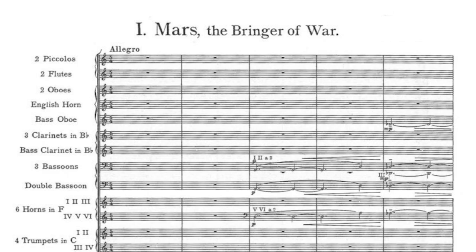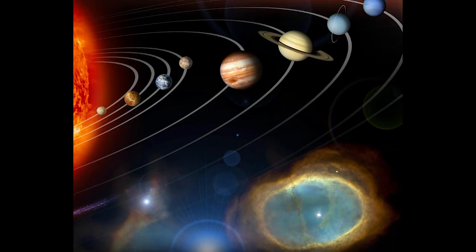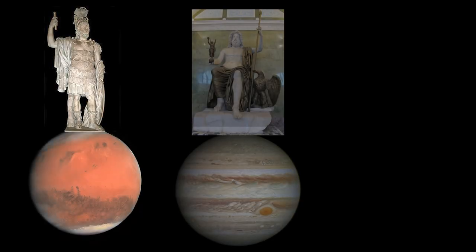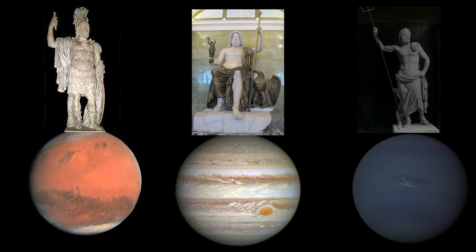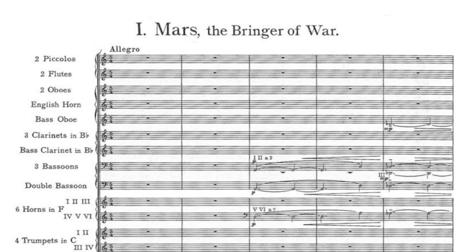Each of the planets in our solar system is named after a god or goddess from Roman mythology — Mars, the god of war; Jupiter, the king of the gods; Neptune, god of the sea; and so on. This is why Holst composes something similar to a military march to depict our red neighbor. And now we see an even deeper connection: Williams didn't just choose a piece based on the way it sounded, but also because of what it already represented — space and war. It's the perfect metaphor for this entire saga.